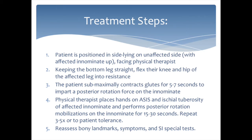The treatment steps are as follows. First, the patient should be positioned in sidelying on their uninvolved side with their involved side up while facing the therapist. Next, while keeping the bottom leg straight, flex the knee and hip of the affected side into resistance. The patient submaximally contracts their hip extensors for 5–7 seconds while the therapist creates a counterforce, producing a posterior rotation force on the innominate. The physical therapist then places their hands on the affected side's ASIS and ischial tuberosity and performs a posterior rotation mobilization on the innominate for 15–30 seconds. This should be repeated 3–5 times or per patient tolerance.